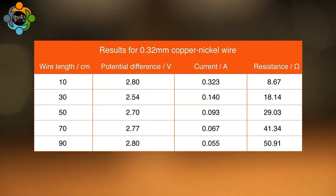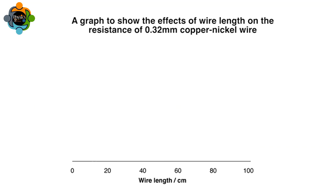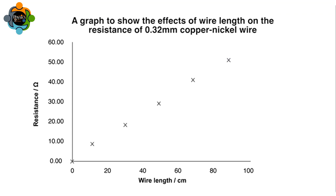Now all of the data has been collected, a graph of the results can be drawn. The independent variable, which is wire length, is plotted on the x-axis and the dependent variable, the resistance, on the y-axis. Each axis is labeled and the units evenly spaced so that they make the best use of the space. The data is plotted by using a small cross for each point.